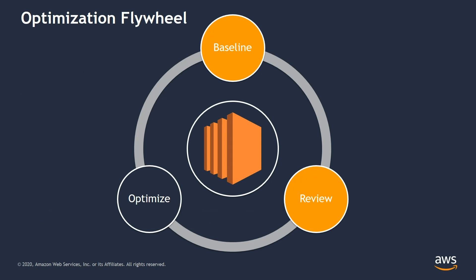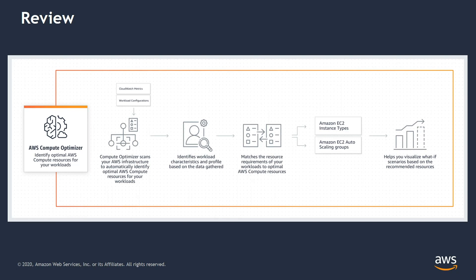Now that we have our baseline metrics within CloudWatch and our flywheel is slowly turning, we move on to the review stage. This stage is where AWS can do the heavy lifting, especially at scale. We launched a product last year called AWS Compute Optimizer. Compute Optimizer is a free service that allows you to reduce costs by up to 25%. It analyzes the configuration and resource utilization of a workload to identify AWS compute resources that may be under-provisioned or over-provisioned, then recommends you to right-size your AWS compute resources and switch to a different instance size or type to save costs. Compute Optimizer also projects what the CPU and memory utilization of your workload would have been on the recommended instance types.